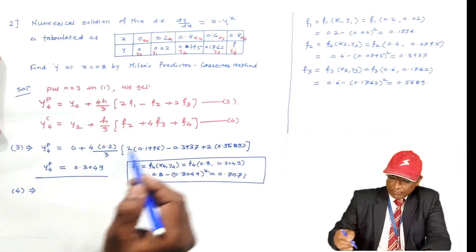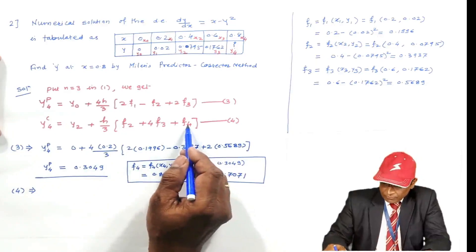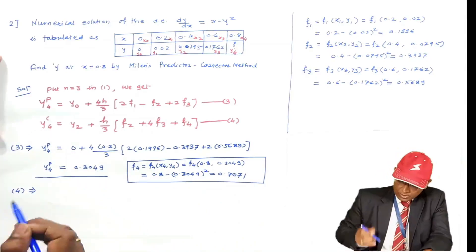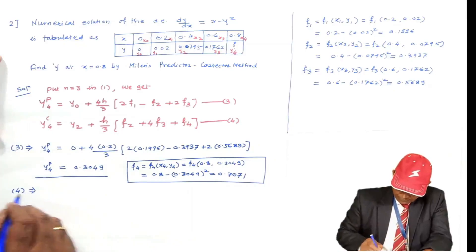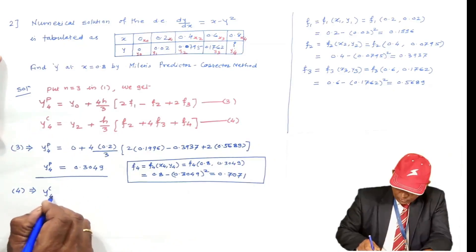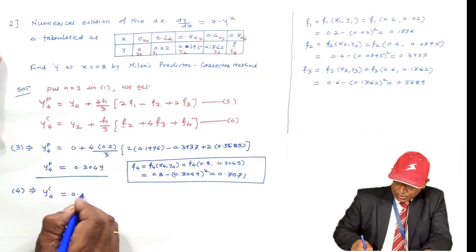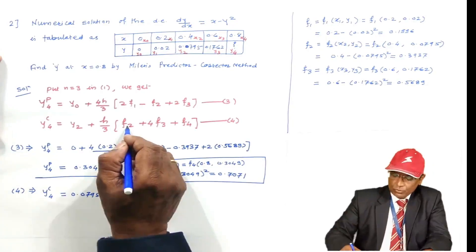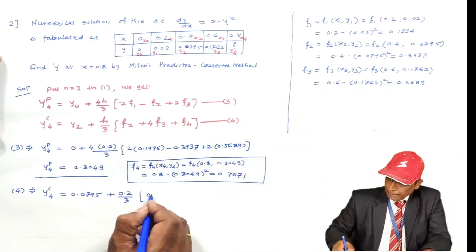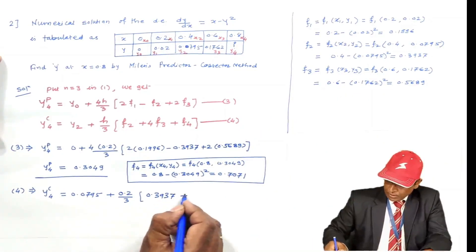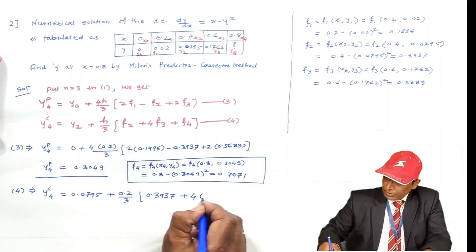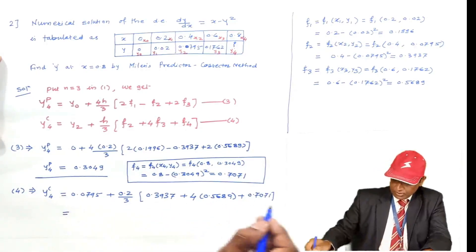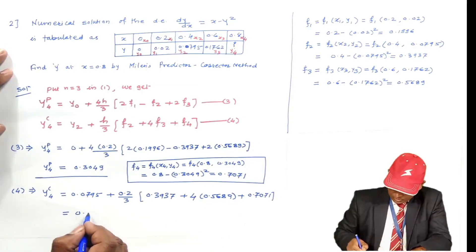Using the corrector formula, F4 = f(X4, Y4P) = f(0.8, 0.304) = 0.8 − (0.304)² = 0.707. Now apply the corrector: YC4 = Y2 + (h/3)[F2 + 4F3 + F4] = 0.0795 + (0.2/3)[0.3937 + 4(0.5689) + 0.707]. The corrected value YC4 = 0.3046.